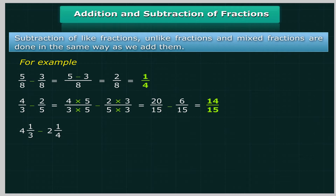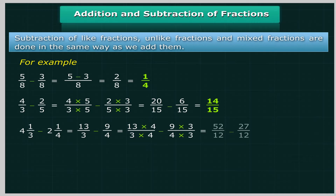For subtraction of mixed fractions: 4⅓ minus 2¼ equals 13 upon 3 minus 9 upon 4, which equals (13×4) upon (3×4) minus (9×3) upon (4×3).